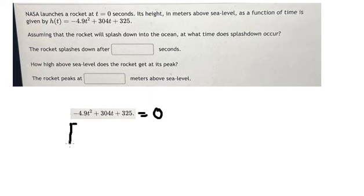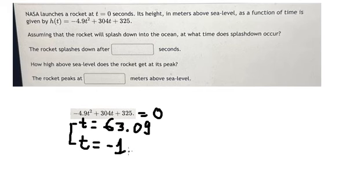We need to find the solutions of this equation, and we have two solutions for t: about 63.09 seconds and the second one, negative 10.5. We can see that we need to select the positive number, so that should be 63.09 seconds.